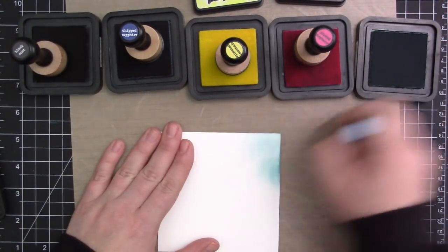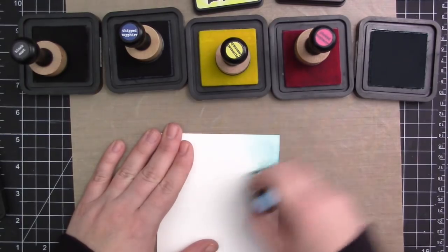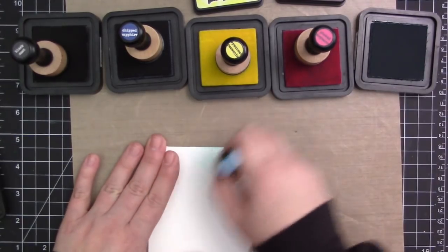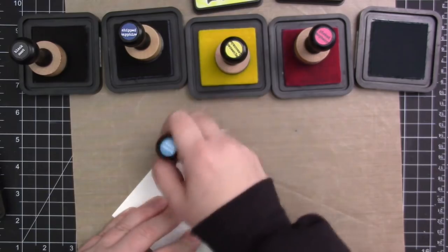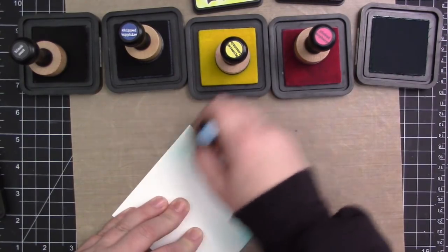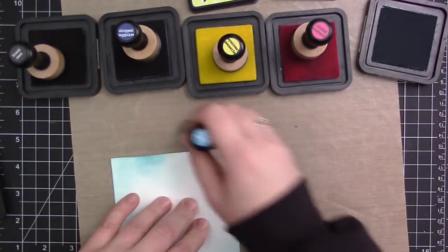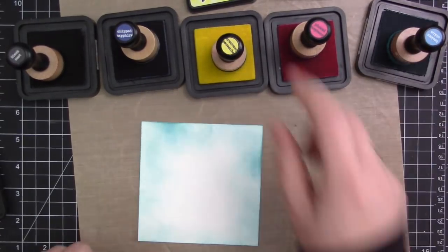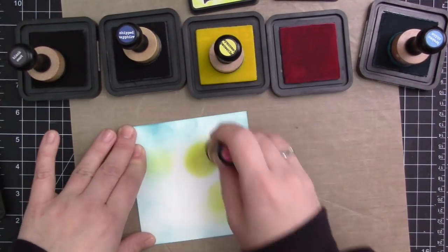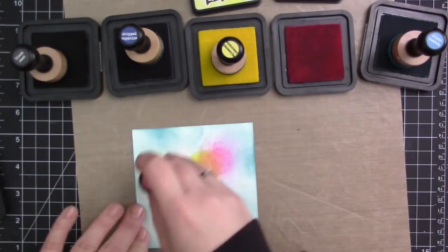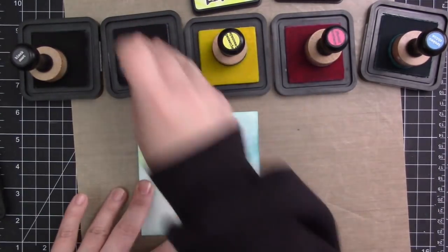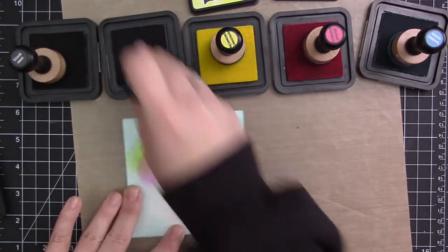So while that one's drying we're going to go ahead and create the second background that we're going to do with Distress Ink. So I'm keeping this one kind of similar to what Francine did. I'm keeping the color similar and kind of the design of it somewhat similar. So to start off I'm using Broken China Distress Ink, and you're not really going to see the Broken China. I just like to have a lighter color just to lay down my initial color and then I kind of build up on top of that.